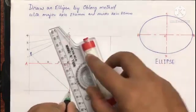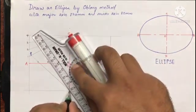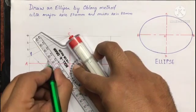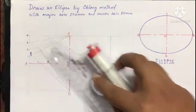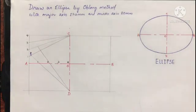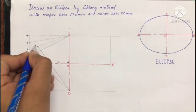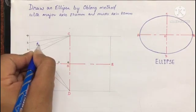Connect D with point number two and extend it until it reaches line number two. This intersection will be point P2.